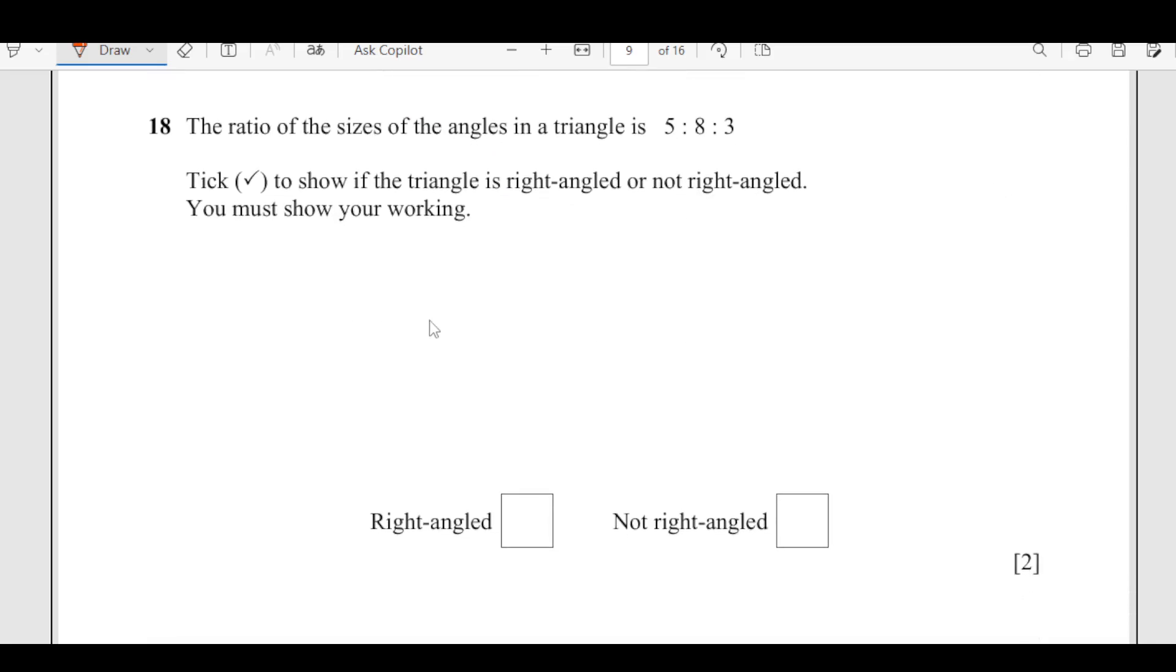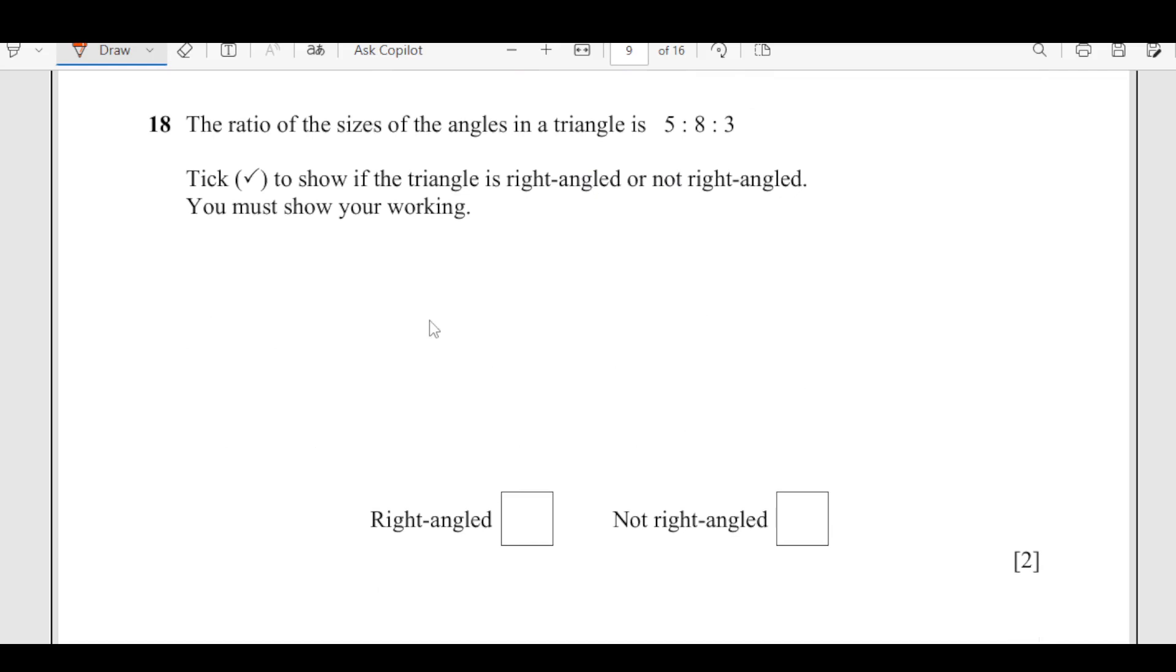Number 18, the ratio of the sizes of angles are in ratio 5, 8 and 3. Tick to show if the triangle is right angled or not right angled. If the triangle is right angle, then hypotenuse is biggest one. That means this angle is going to be 90 and this should have the ratio of 8.